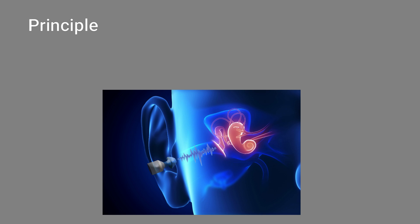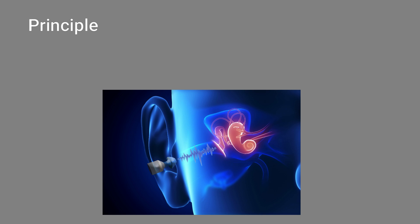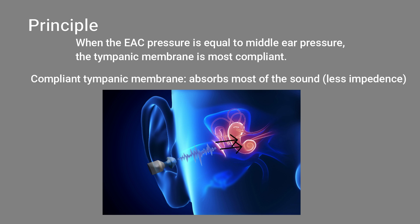When the tympanic membrane is stiff it would reflect more sound energy than a compliant tympanic membrane. The probe continuously changes the external auditory canal pressure. When the pressure in the air canal corresponds to the pressure in the middle ear cavity, the tympanic membrane is at its most compliant point and thus absorbs rather than reflects most of the sound. So at that pressure point, we know the middle ear pressure.